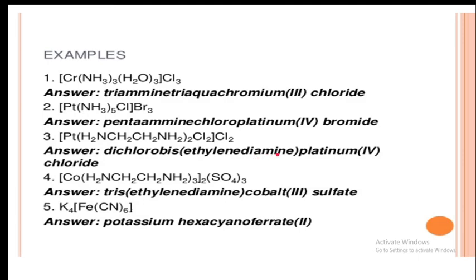Example 3: [Co(NH2CH2CH2NH2)3]SO4 — a cobalt complex with ethylenediamine ligands. Since ethylenediamine already contains a Greek prefix, we use tris. The name is tris(ethylenediamine)cobalt sulfate. Cobalt's oxidation state: sulfate is minus 2, so 2x equals plus 6, giving x equals 3. Therefore the name is tris(ethylenediamine)cobalt(III) sulfate.